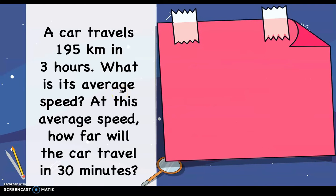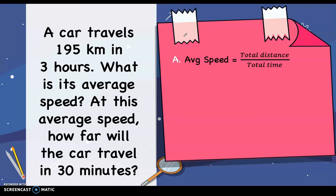Next example: a car travels 195 kilometers in 3 hours. What is its average speed? Using the formula, average speed equals total distance divided by total time: 195 kilometers divided by 3 hours. We divide 195 by 3 and get 65, so the average speed is 65 kilometers per hour. The second question: at this average speed, how far will the car travel in 30 minutes?